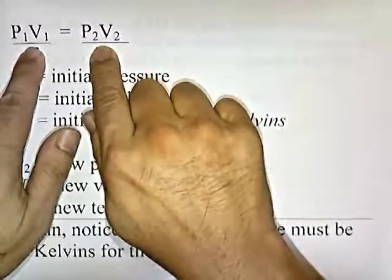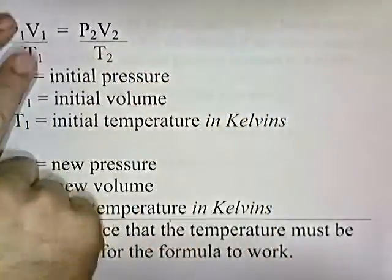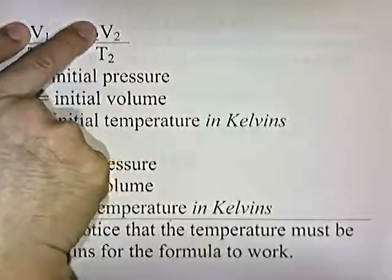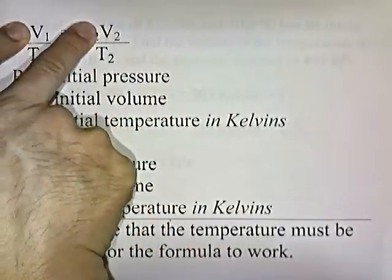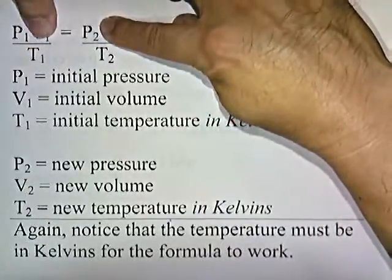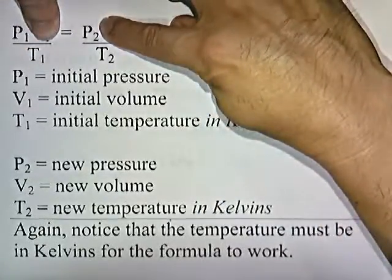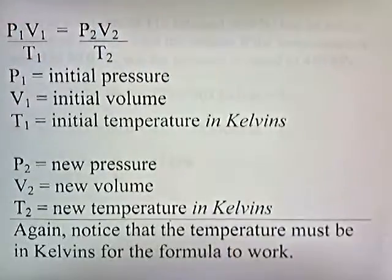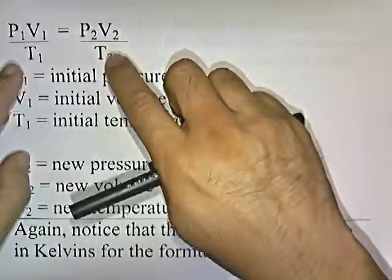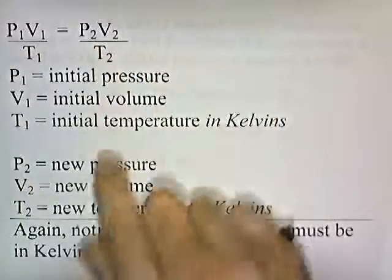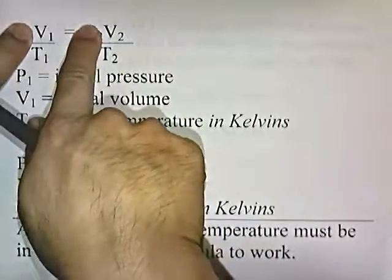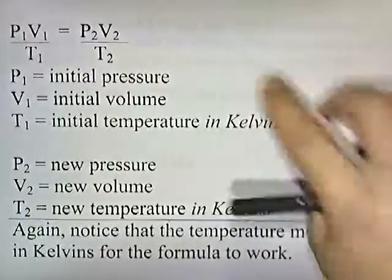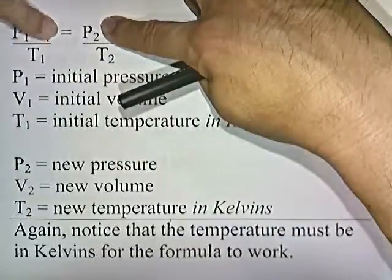If I put my fingers over the temperature, you get Boyle's Law. If I put my fingers over the pressure, you get V1 over T1 equals V2 over T2 — that's Charles' Law. And if the volume doesn't change, you get Gay-Lussac's Law: P1 over T1 equals P2 over T2. So really, just memorize the combined gas law. If the temperature doesn't change, cross that out. If the pressure doesn't change, cross out the P's. If the volume doesn't change, cross out the V's.